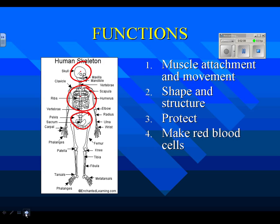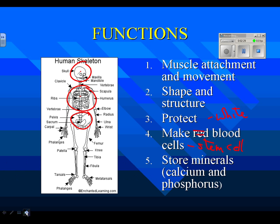One of the functions is to make blood cells. The stem cells for red blood cells are found in the bone marrow. We should actually say blood cells, because white blood cells called B cells are also made in the bone marrow. And the last function — one people forget — is that the skeleton stores minerals. Calcium and phosphorus are stored in the bones for use later.